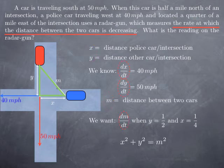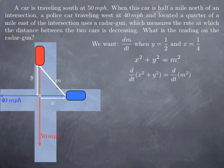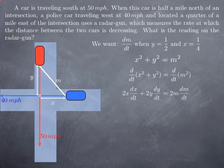So to obtain this equation relating the rates of change, we differentiate with respect to time and obtain 2x multiplied by dx over dt plus 2y multiplied by dy over dt is equal to 2m multiplied by dm over dt.